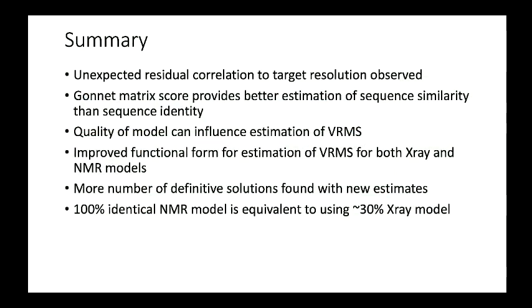In summary, we found unexpected residual correlation to the target. This was unusual; we did not expect it. Probably due to the disorder associated with the protein crystal, we have to expect higher RMSD. If the same protein in a different crystal form were to diffract to a higher resolution, using the same model, we could probably have a lower estimation for RMSD. We found that the Gawney matrix is a better way of understanding sequence similarity, and we have used it to replace sequence identity. We have understood the quality of model can influence estimation of VRMS and VRMS itself.